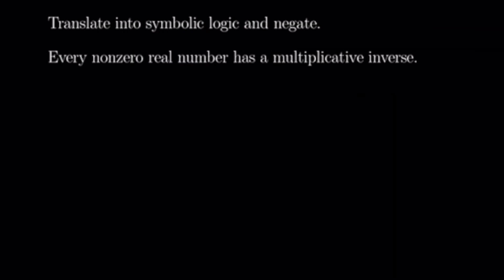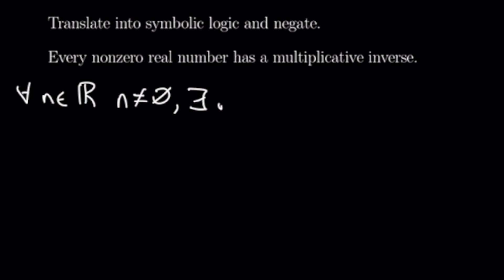This one says: every non-zero real number has a multiplicative inverse. So let's go ahead and translate this. We'll have: for all n in the reals where n is not equal to zero, there exists an m in the reals such that n times m is equal to one.